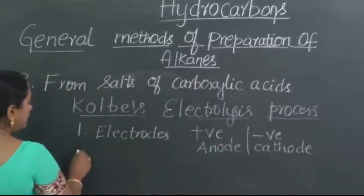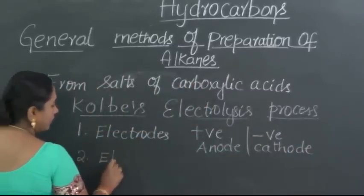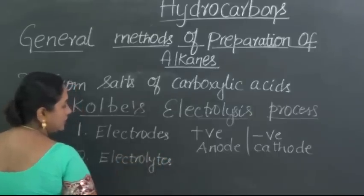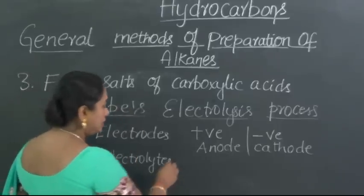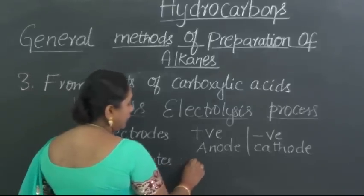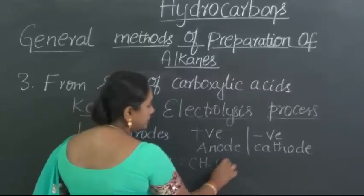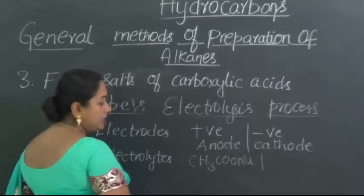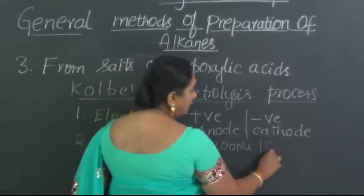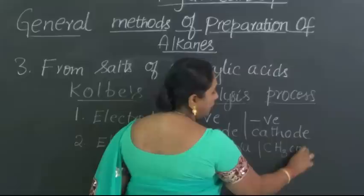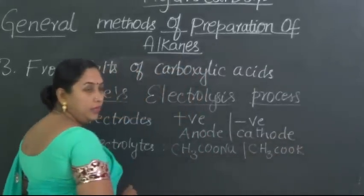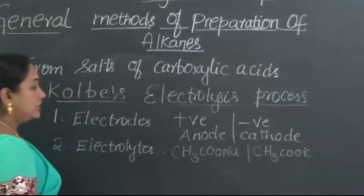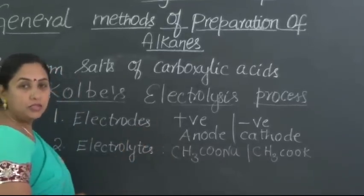Then, these electrodes get immersed in the solutions which can conduct the electric current called electrolytes. The electrolytes in this process that we are going to use would be either sodium salt of this carboxylic acid, namely sodium acetate or sodium ethanoate, or else we can take potassium salt of the carboxylic acid, namely potassium acetate or potassium ethanoate. Any of them will act as the electrolytes in this process. In fact, both of them are strong electrolytes.